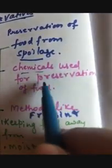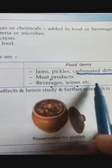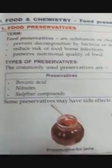We use different types of chemicals also for preservation of food. Let's see what are the chemicals which we use for preservation of food. Benzoic acid is used for preserving jams, pickles and carbonated drinks - soft drinks like your Pepsi, Coke. Then nitrates are used for preserving meat products. Sulfur compounds used for beverages, wines.